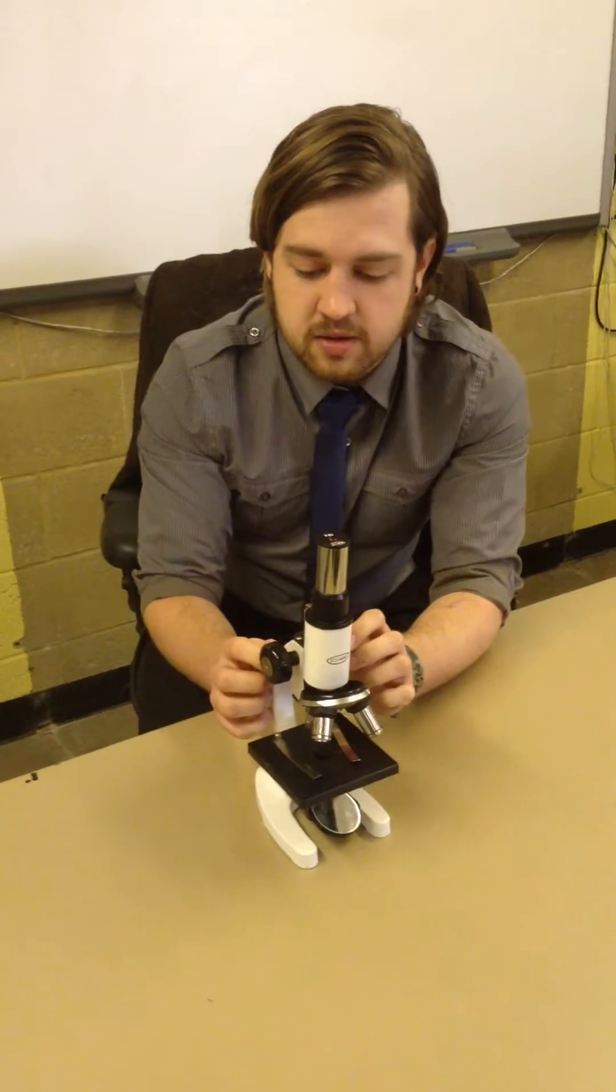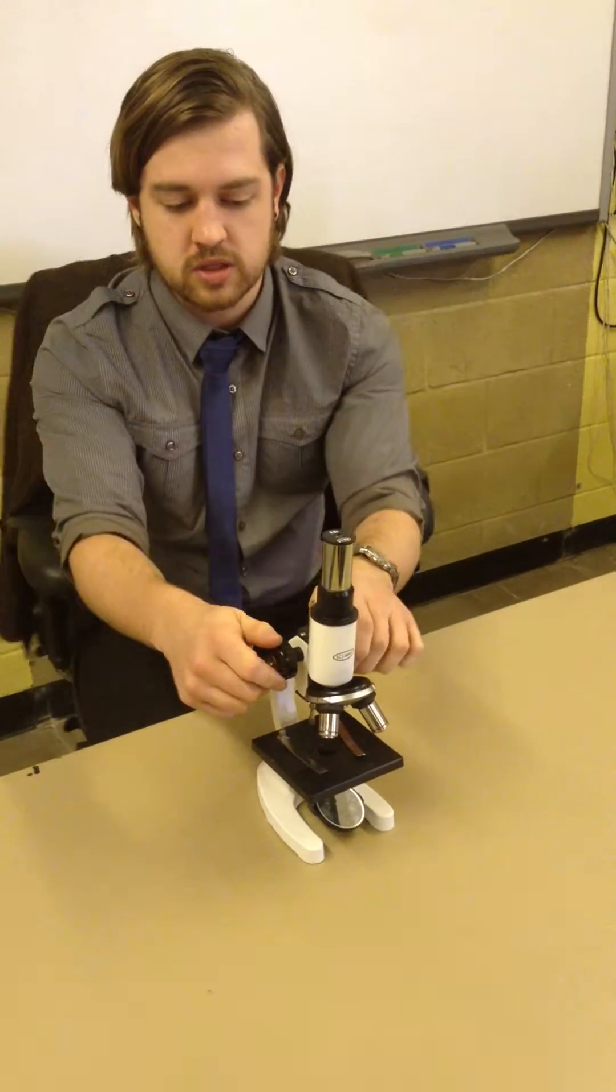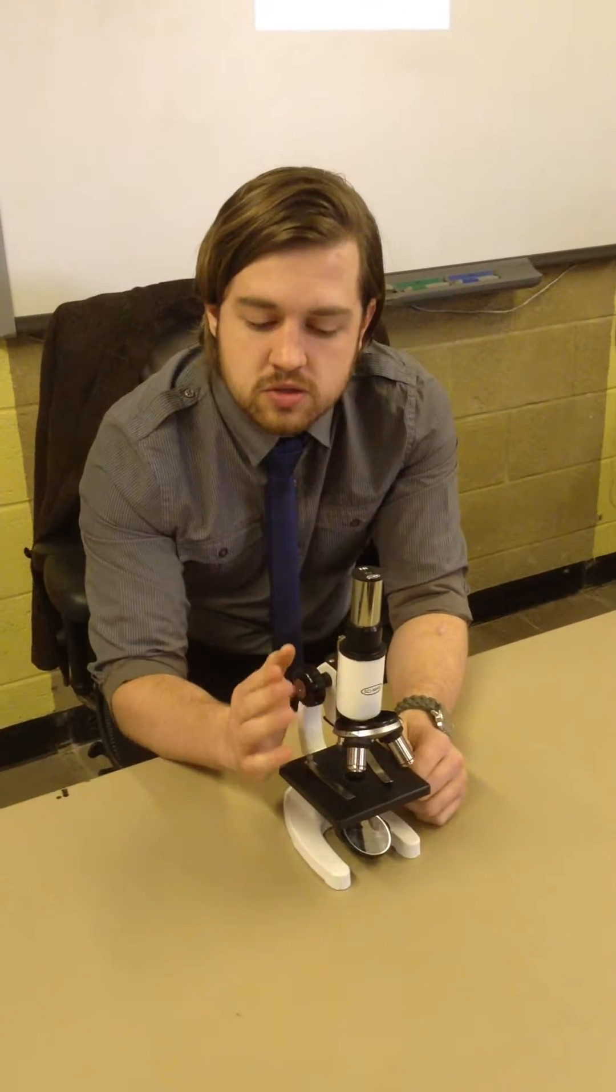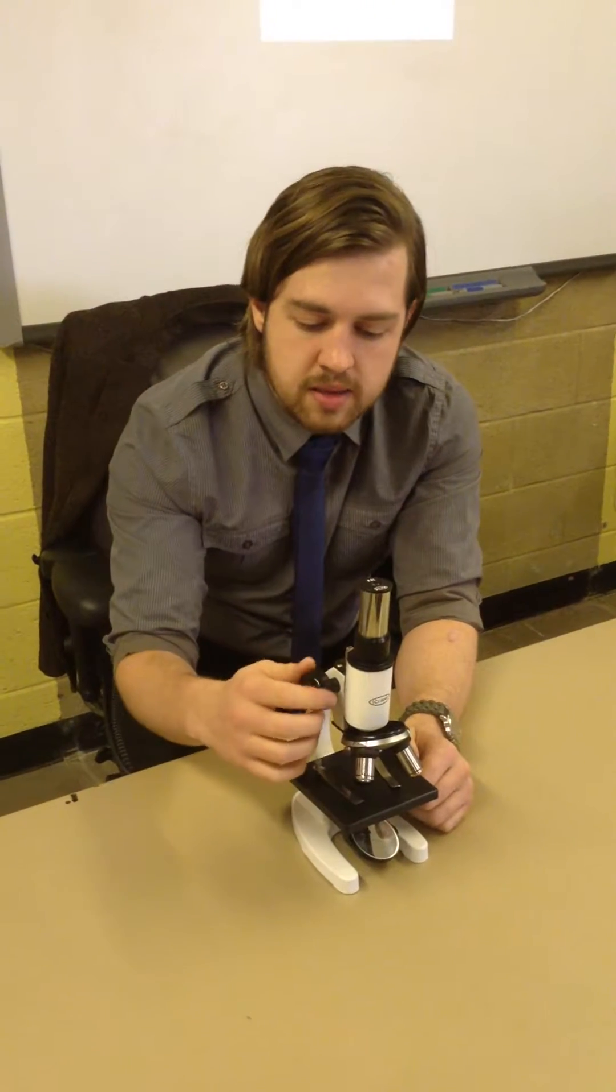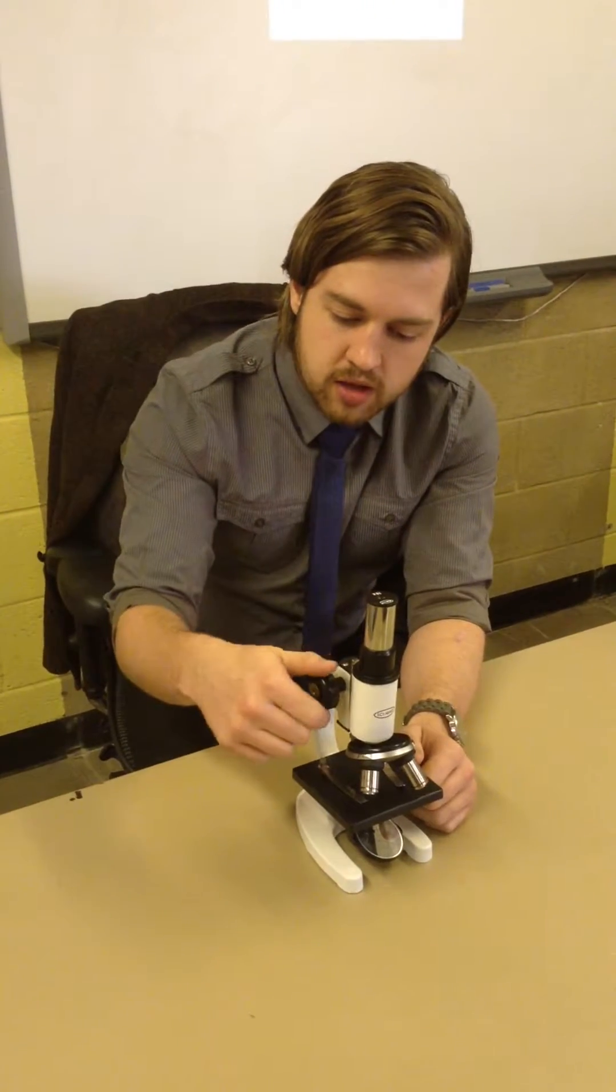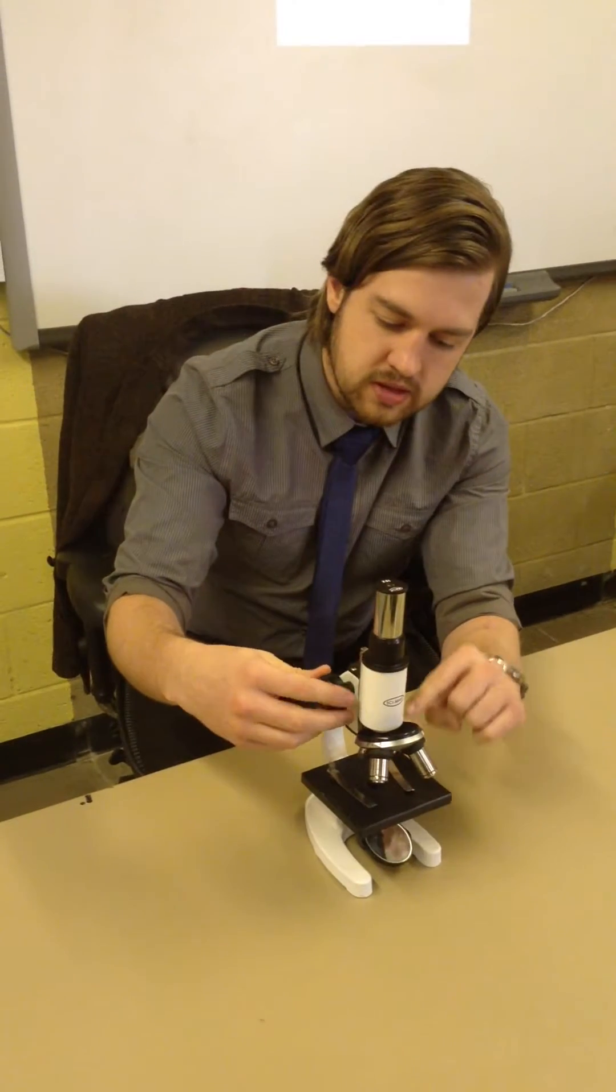The next thing I'm going to focus on is these. These are your focusing wheels. Now, some microscopes in the school have two focusing wheels, some only have one. You use the focusing wheel to move these lenses closer and further away from the slide in order to focus the image.